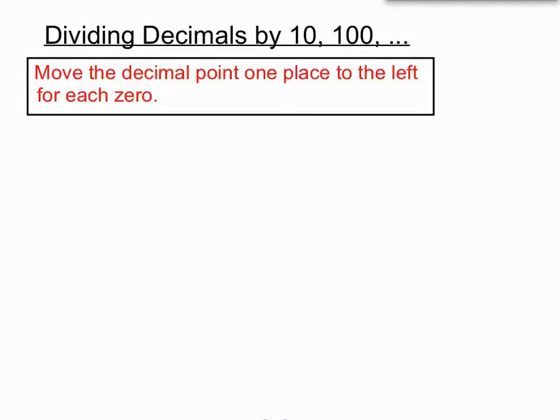OK, dividing decimals by 10, 100 and 1000. Now when we were multiplying in the last video by 10, 100 and 1000, we moved our decimal point one place to the right for each zero. I think you can pick that the opposite of multiplying is dividing. So we're going to move the decimal point one place to the left for each zero this time.